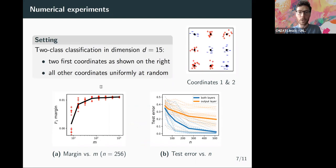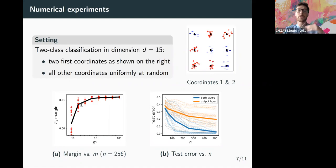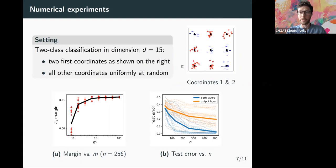For numerical illustration, in a similar setting to Maria's talk, we consider a classification task with two classes in dimension 15, where only the first two coordinates are relevant and the remaining 13 are pure noise. Plotting the F1 margin as a function of m, the number of neurons, we observe that around 100 neurons are sufficient to converge to the F1 max-margin in this specific example, though in general this efficiency is not always guaranteed.